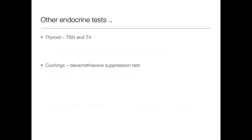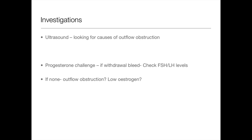Other endocrine tests include a dexamethasone suppression test for Cushing's, and TSH and T4 for thyroid — that covers most endocrine abnormalities. Also do an ultrasound looking for causes of outflow tract obstruction such as fibroids or polyps. A progesterone challenge test can be useful — it checks if there is a withdrawal bleed. If there is no withdrawal bleed, you need to think about outflow tract obstruction or low oestrogen levels.